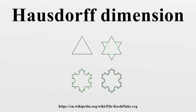Stated another way, we have taken an object with Euclidean dimension d and reduced its linear scale by one-third in each direction, so that its length increases to n equals s^d. This equation is easily solved for d, yielding the ratio of logarithms appearing in the figures, and giving, in the Koch and other fractal cases, non-integer dimensions for these objects.